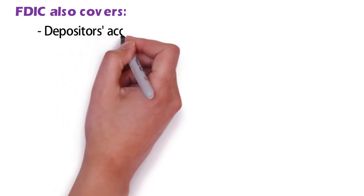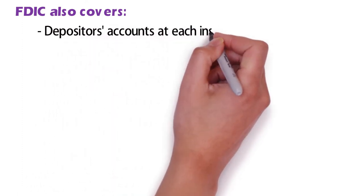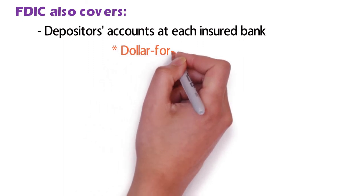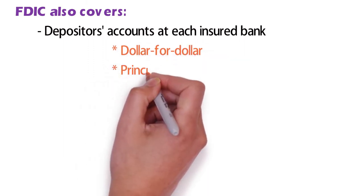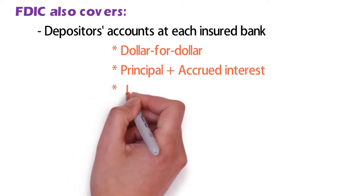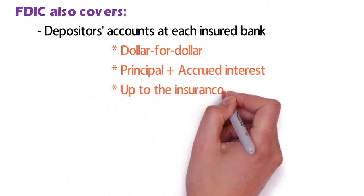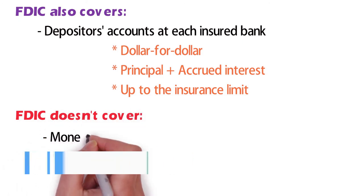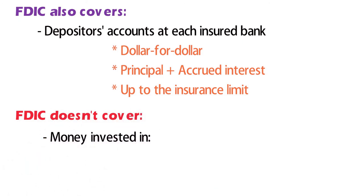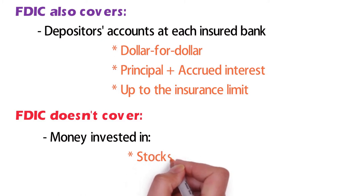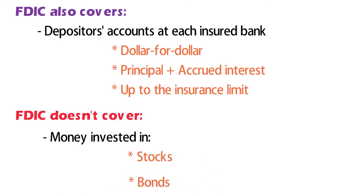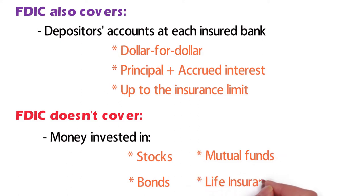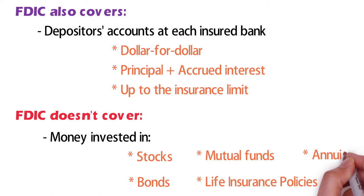FDIC insurance also covers depositors' accounts at each insured bank dollar for dollar, including principal and any accrued interest, through the date of the insured bank's closing up to the insurance limit. The FDIC, however, does not insure money invested in stocks, bonds, mutual funds, life insurance policies, annuities, or municipal securities, even if these investments are purchased at an insured bank.